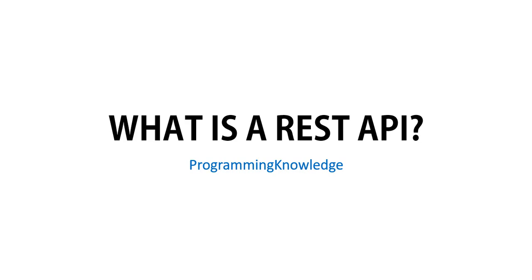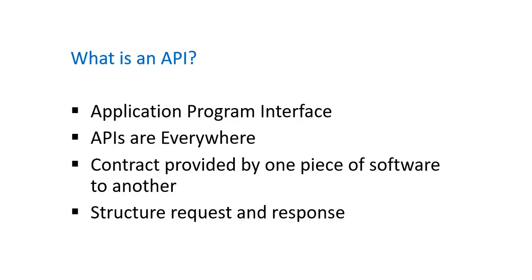Now let's go into the details of what is an API. Basically, API stands for Application Program Interface — that's a very broad term. There are all kinds of APIs, but we're specifically talking about web APIs here. There are APIs in your smartphones or even in your refrigerators, so it is a very generalized concept. Essentially, an API is a contract provided by one piece of software to another piece of software.